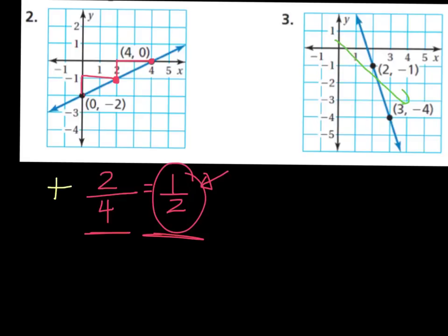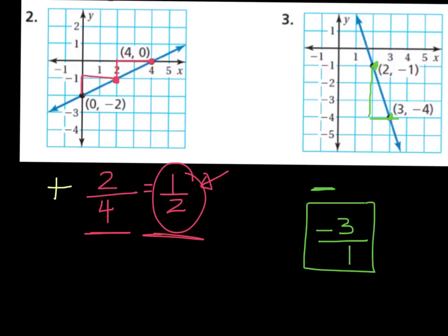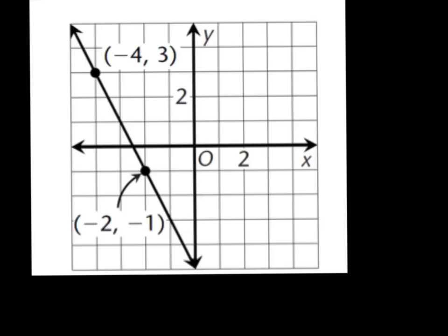Example three: as I look at this line going from left to right, it's going down, so right away I know it has a negative slope. I'll make a note of that. Between my two points, I go down one, two, three — since I'm going down I write that as negative three — and then over to the right one. So my slope is negative three over one, or just negative three.